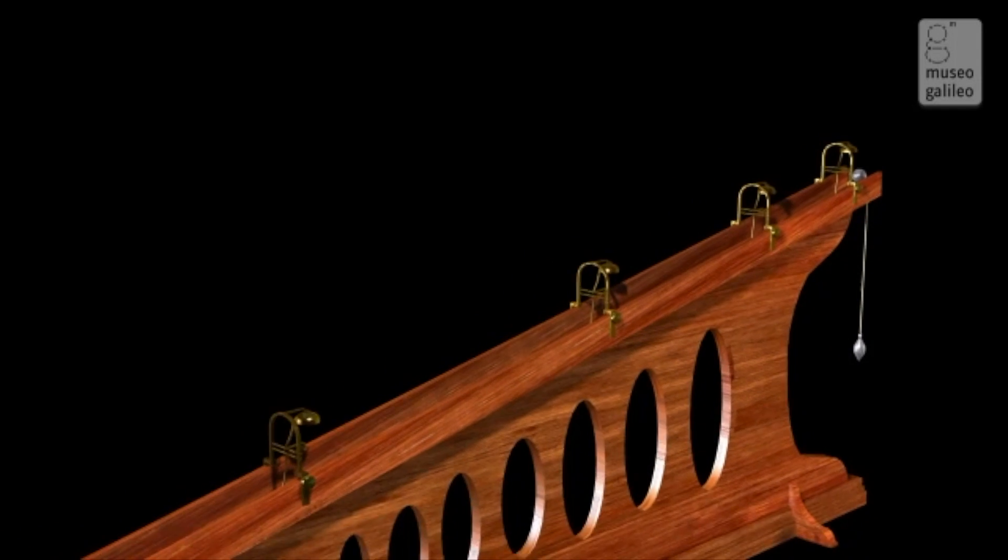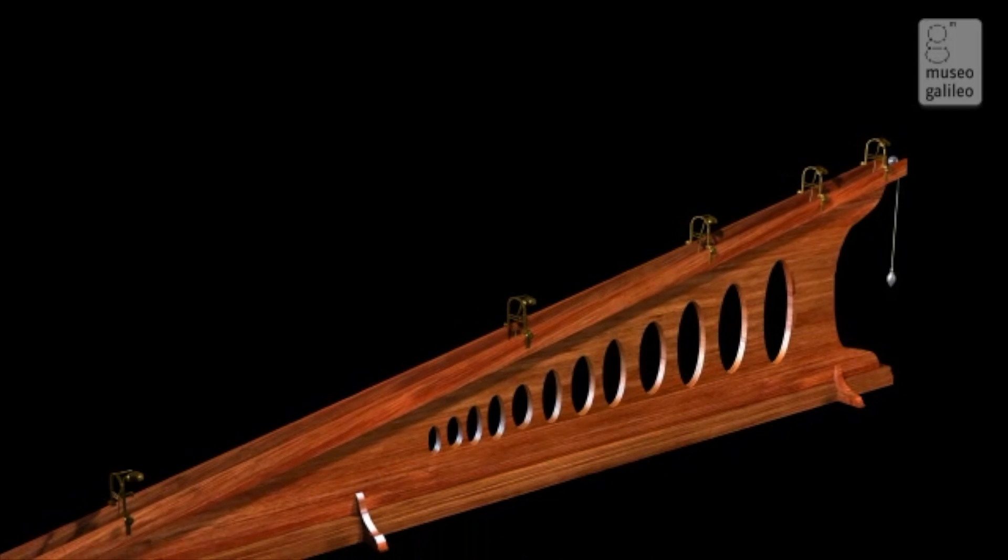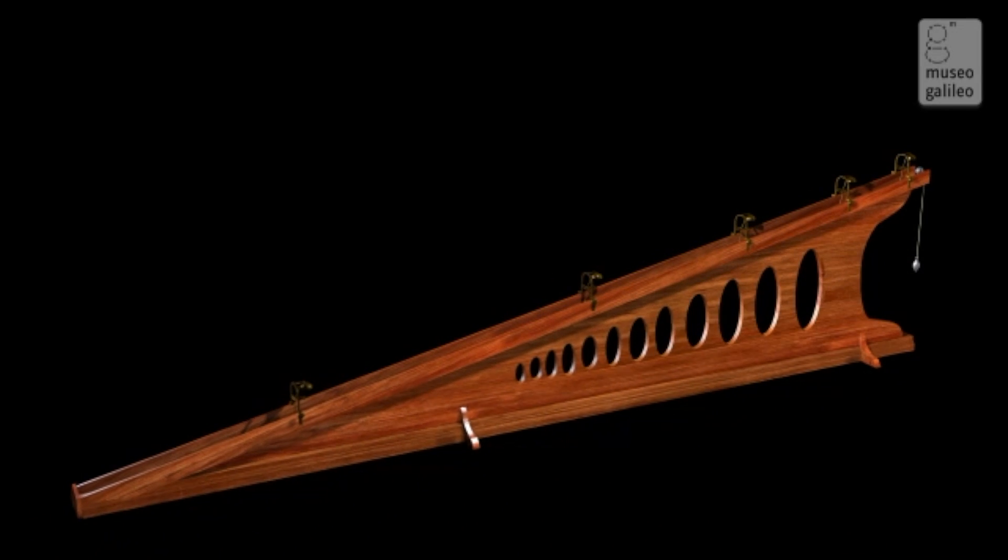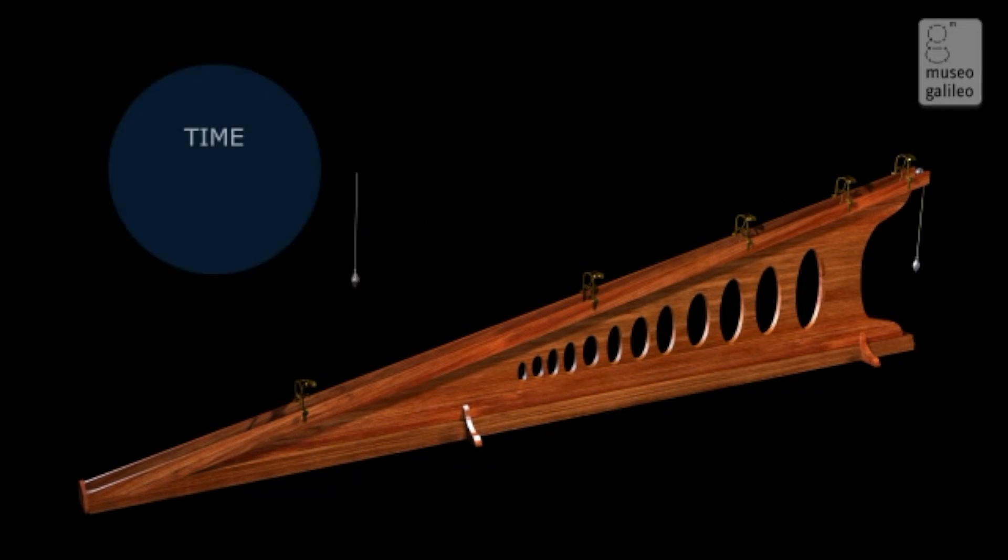This experimental apparatus provided a demonstration of the Galilean law of the natural fall of bodies, which stated that the spaces traversed from a position of rest are proportional to the squares of the times of fall. The pendulum attached to the inclined plane was swung at the same time as the small ball was released.